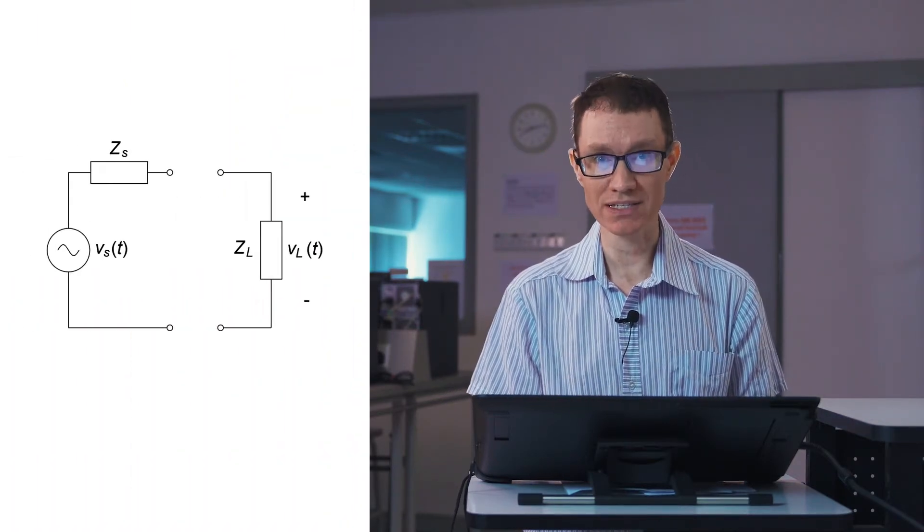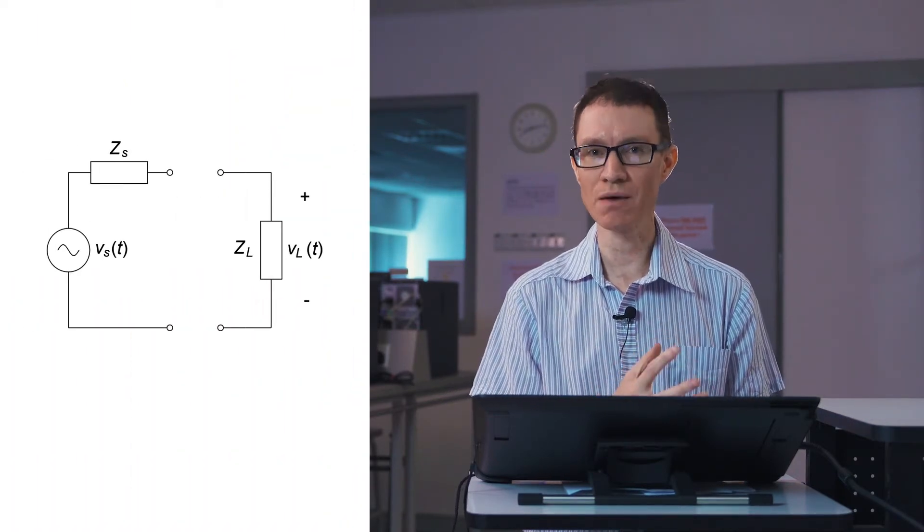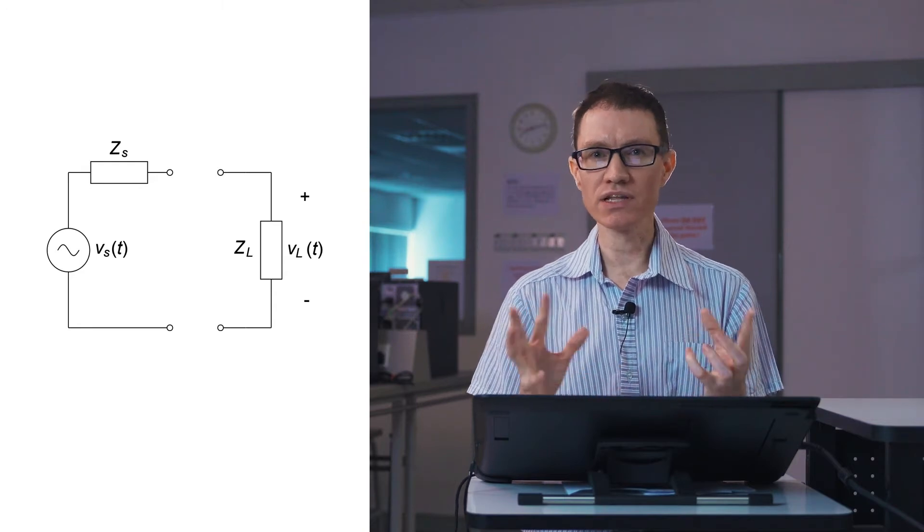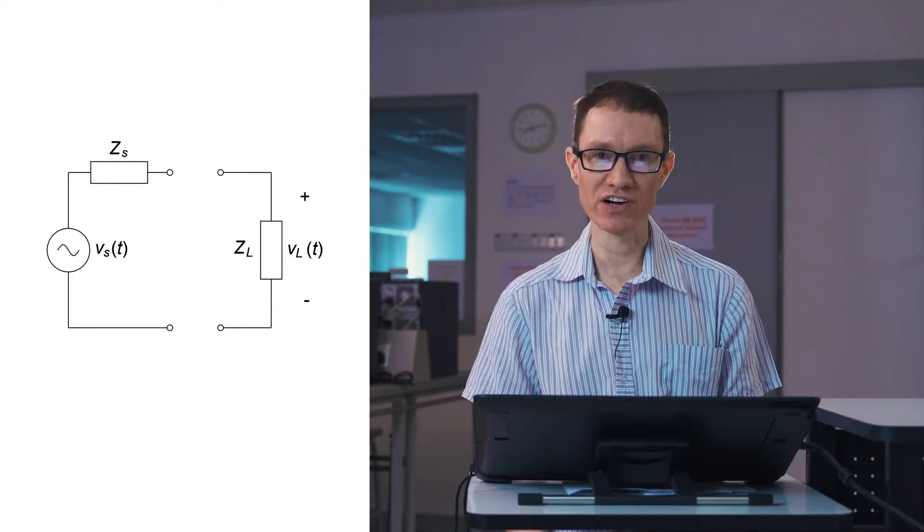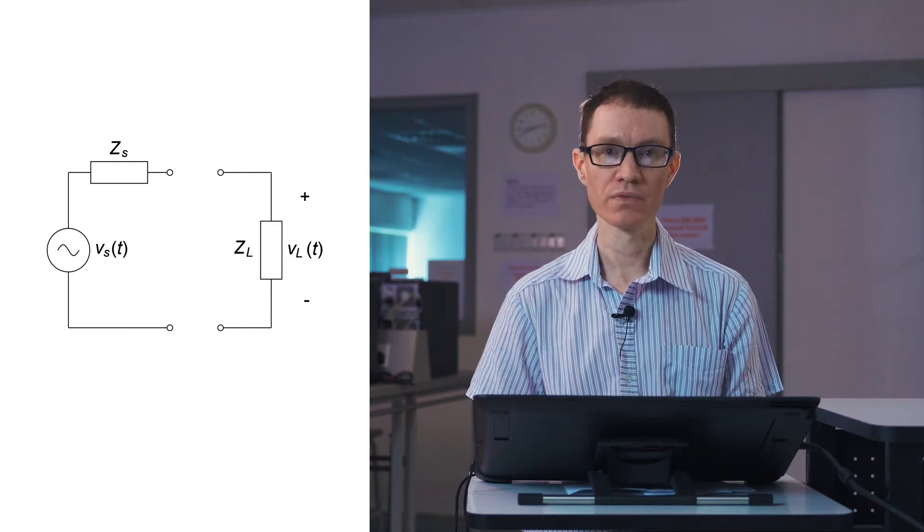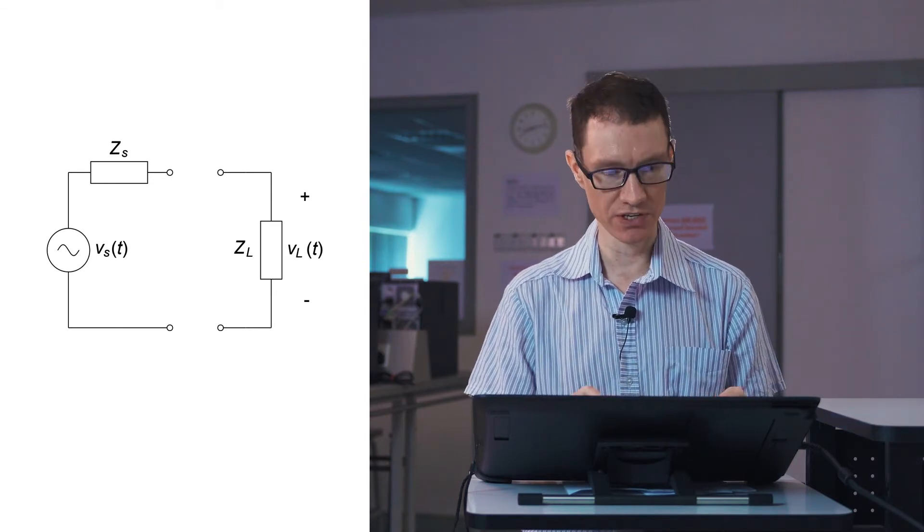If we have a source with a complex impedance and we have a load with a complex impedance, then what's the relationship between the source and load impedance which maximizes power transfer from the source to the load? That's what we're going to look at here in this video.